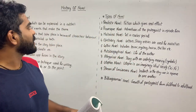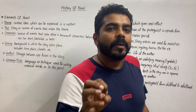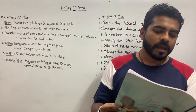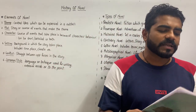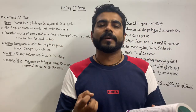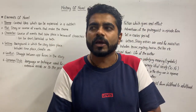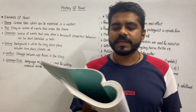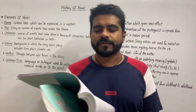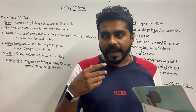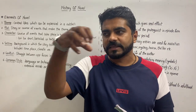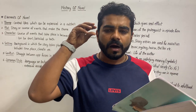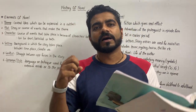Elements of a novel — what are the various things that a novel is based on or contains? The first one is the theme. Theme is the central idea in the novel, which can be expressed in a nutshell. It is a philosophical statement or a truth which the writer has put forth through the narration of a series of events in the story, and the message is received by the audience.